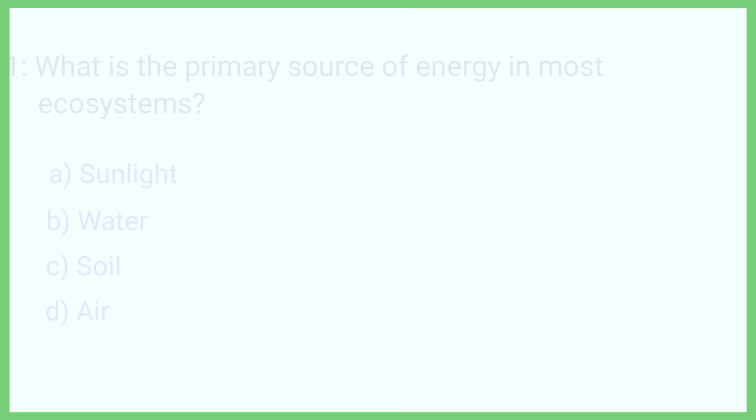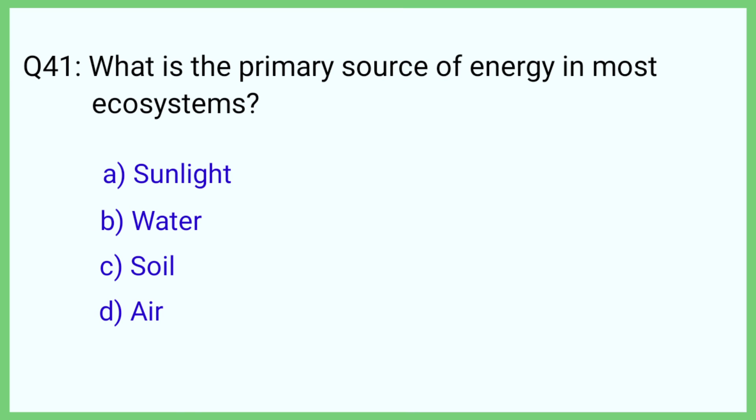Question number 41. What is the primary source of energy in most ecosystems? The correct answer is option A: Sunlight.